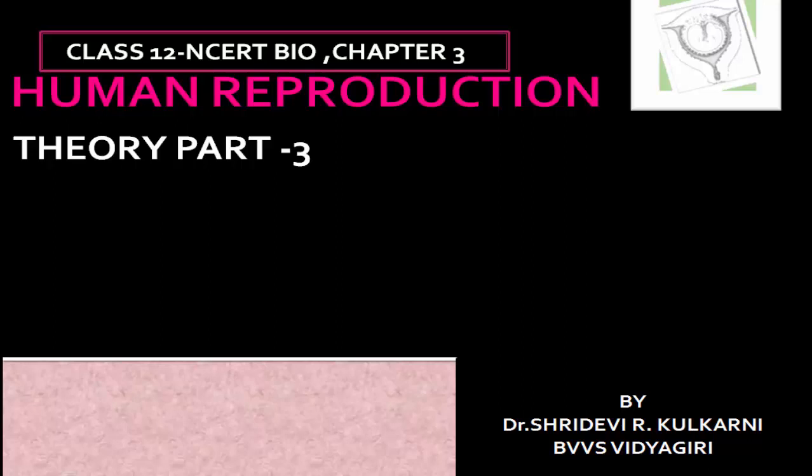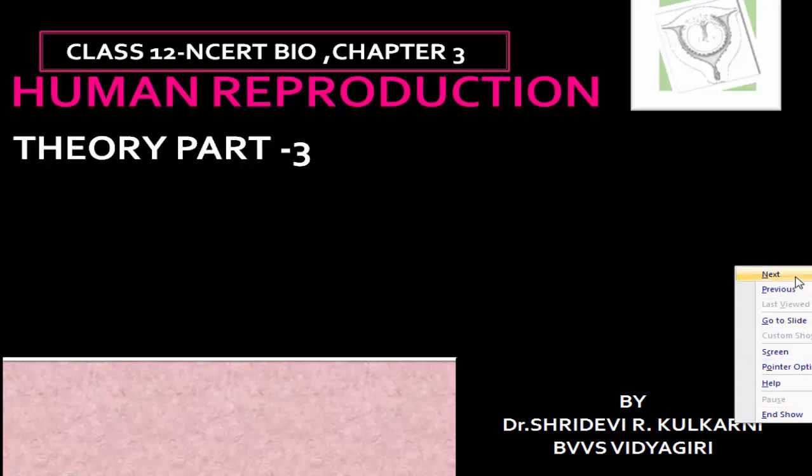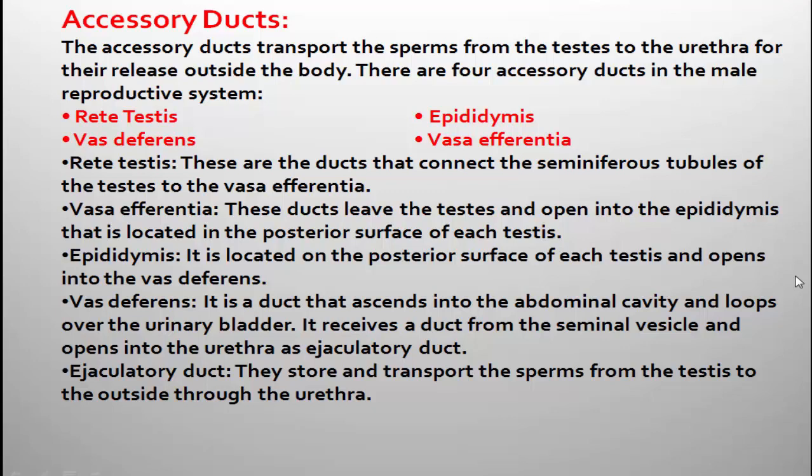Hello dear students, in this video I will continue the next part of human reproduction. Today I am going to explain about accessory ducts of the male reproductive system. The male reproductive system consists of four parts: the primary sex organs (testes), accessory ducts, accessory glands, and external genitalia. Let us move to the details of accessory ducts.